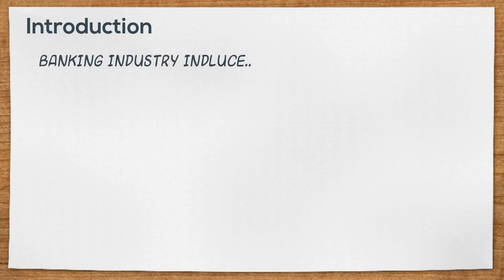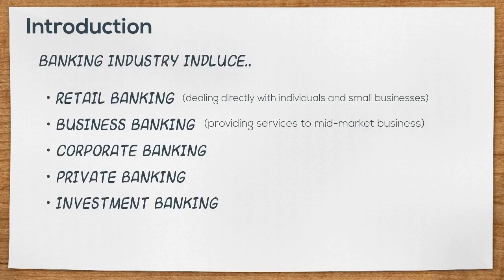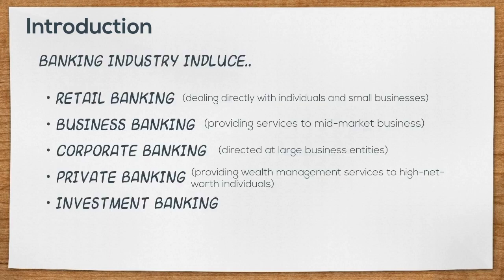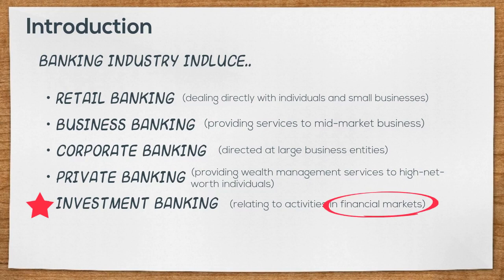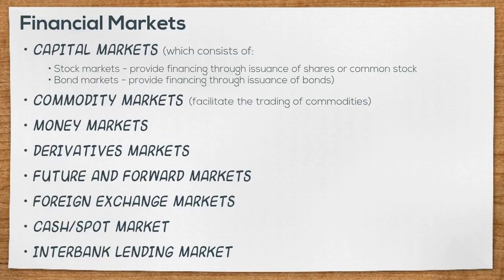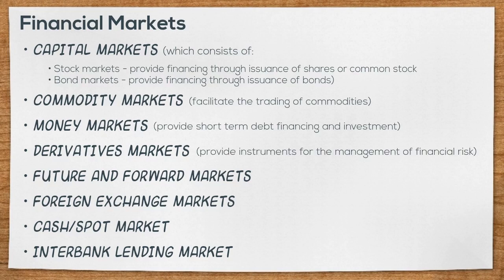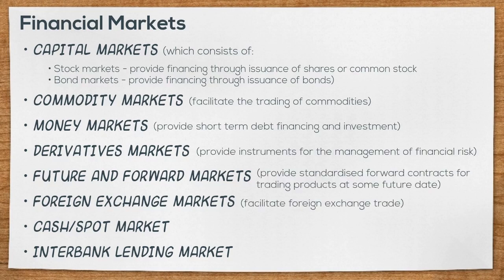The banking industry includes retail, business, corporate, private, and investment banking, which is going to be our focus. Investment banking relates to activities on financial markets, which consist of capital, commodity, money, derivatives, future and forward, forex, cash, and interbank lending markets. This video aims to cover the major developments affecting the investment banking industry in the last 10 years, mainly regulatory and political changes.